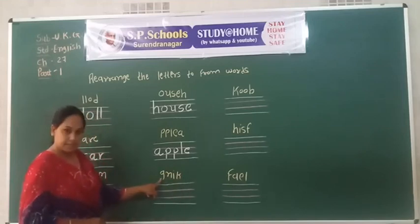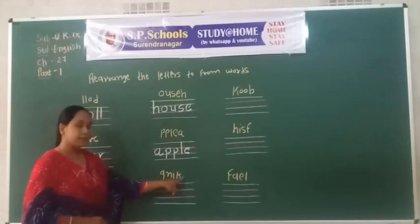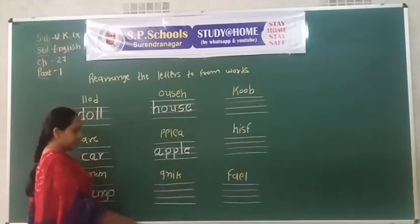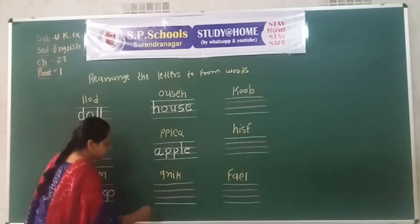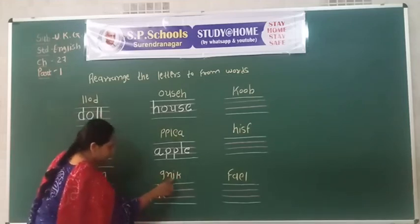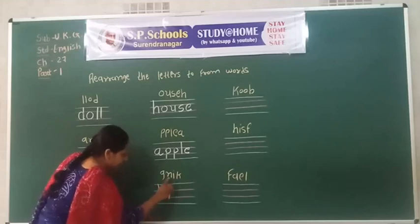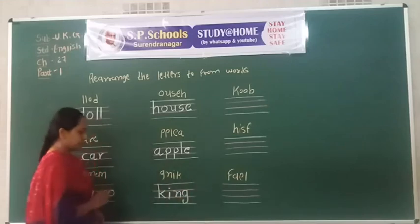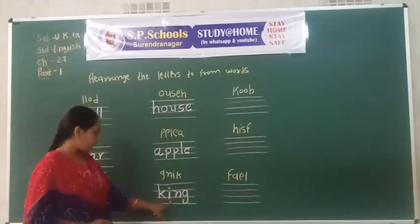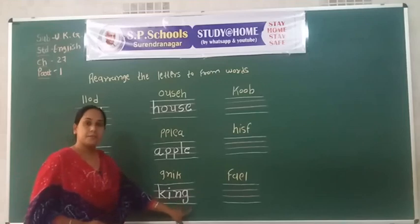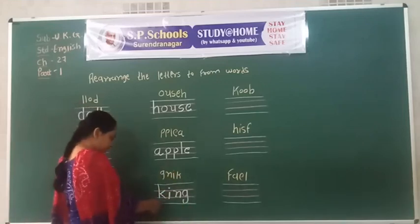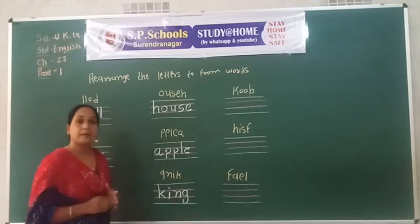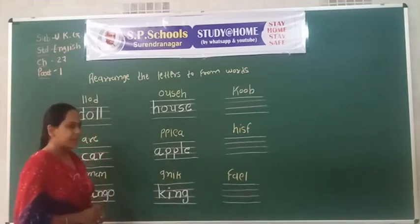Next word: G, N, I, K. This is one of the correct things. K, I, N, G. King! K, I, N, G. King! K, I, N, G. King.